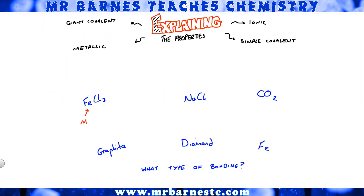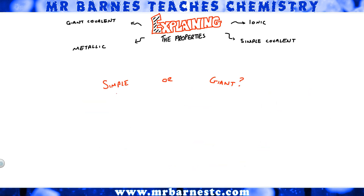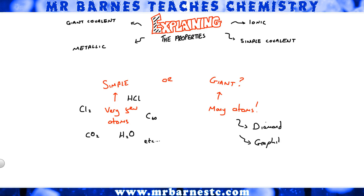Going back to those examples: iron chloride — iron is a metal, chlorine is a nonmetal, therefore it is ionic. Sodium chloride — sodium is a metal, chlorine is a nonmetal, therefore again it's ionic. Carbon dioxide — carbon is a nonmetal, oxygen is a nonmetal, therefore it's covalent. To work out whether it's simple or giant covalent: if it has very few atoms like CO2 or H2O, it's simple. If it has loads and loads of atoms — like diamond, graphite, nanotubes, graphene — it's giant covalent.